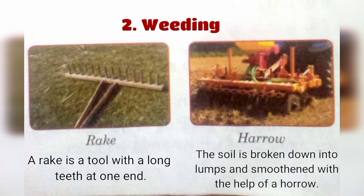The next step is weeding. Weeding is done with the rake or harrow. A rake is a tool with long teeth at one end. The soil is broken down into lumps and smoothed with the help of a harrow. Weeds are removed through these two types of tools.